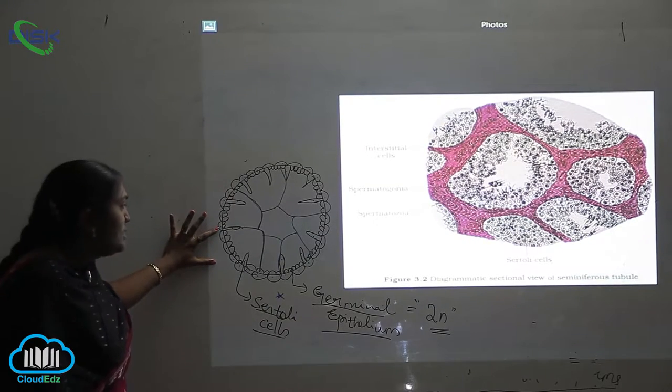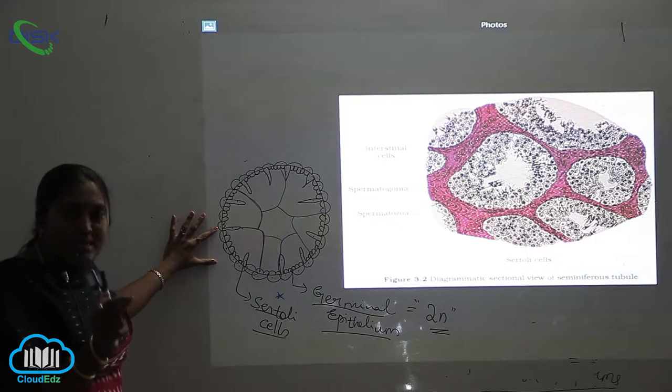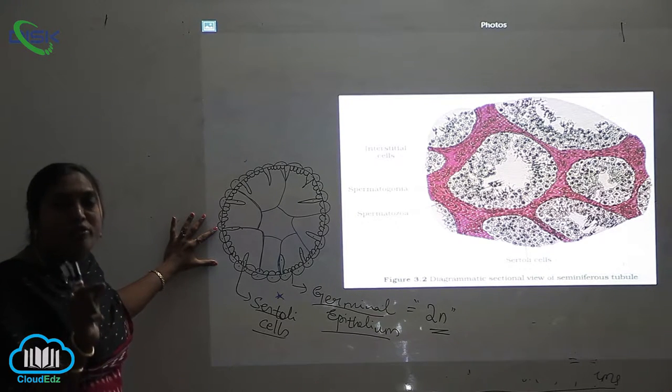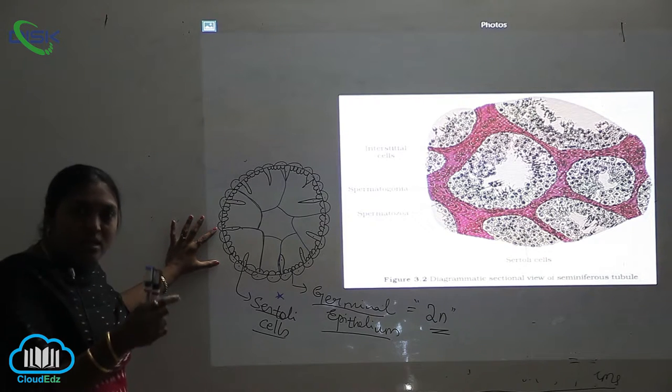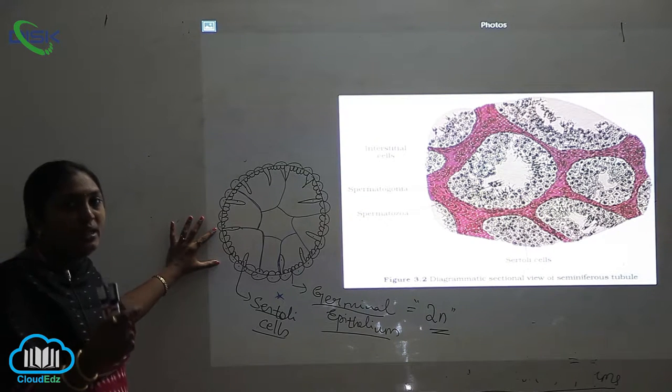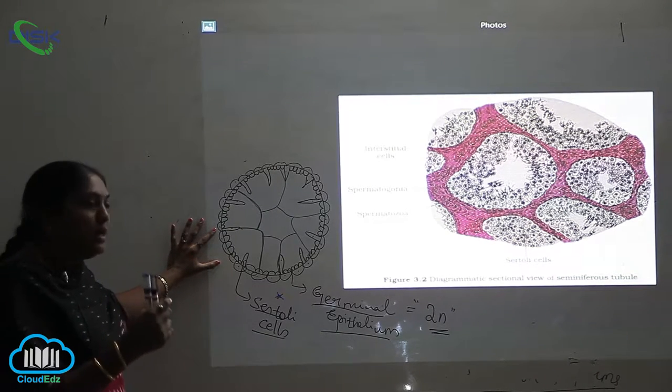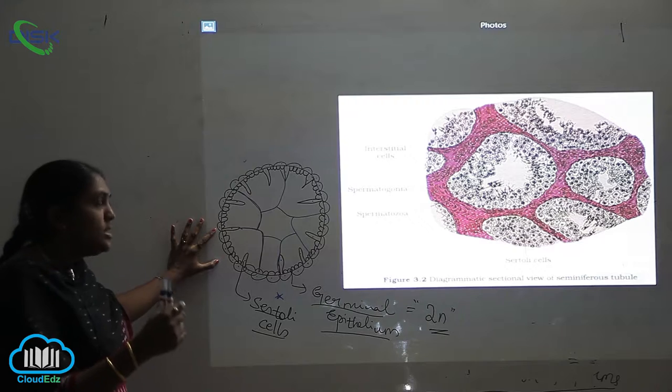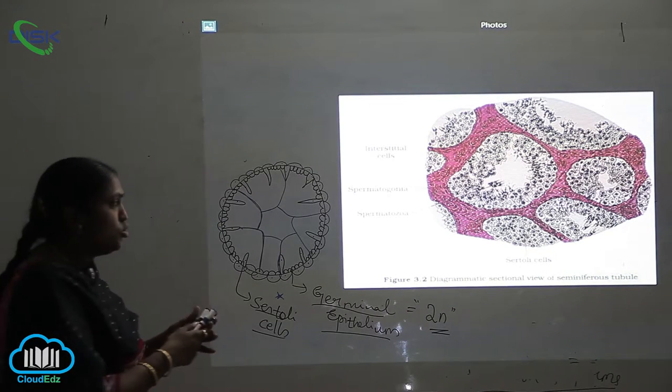The main function of Sertoli cells is the production of sperms. The division taking place in the formation of sperms is called spermatogenesis, and the sperm mother cells, spermatogonia, perform spermatogenesis.